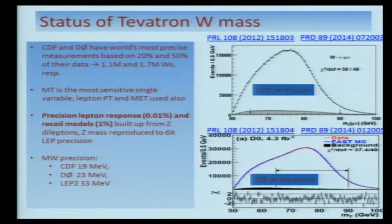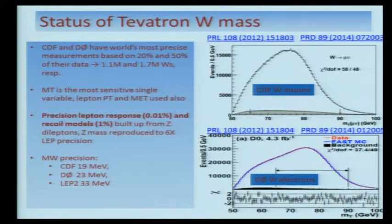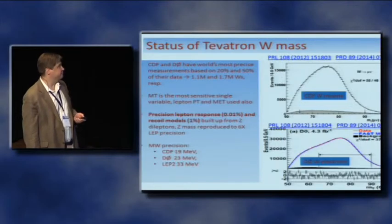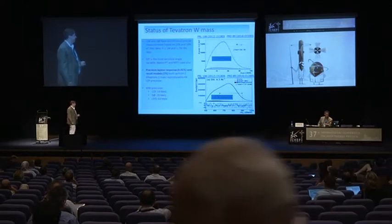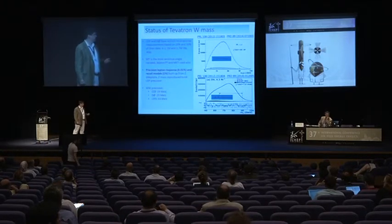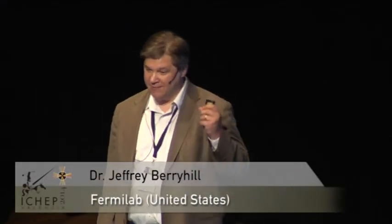Moving on to W physics, the Tevatron is still the king of W mass measurements. CDF and D0 have the world's most precise measurements based on only a fraction of their data — 20% and 50% respectively — with very nice templates modeling about one to two million W candidates and precise models of lepton momentum and missing energy. They estimate the W mass from a template fit requiring a lepton energy scale precision as good as 0.01% and a 1% precision model of vector boson recoil. CDF achieves 19 MeV precision, D0 achieves 23 MeV, compared to 33 MeV from LEP, giving a world average of 15 MeV.